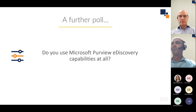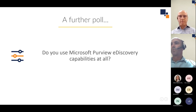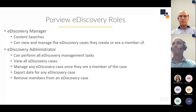Looking at the results: most responses are 'yes, partially' at 67%, some are not using it but are aware of the capabilities, and others have no knowledge. That's a good mix. Those saying 'yes, partially' probably use some aspects. What I hope to show is a broad cross-section of the capabilities. Let me share my screen.